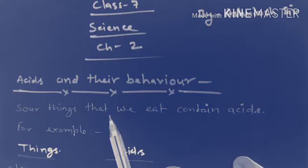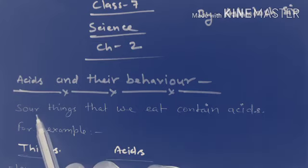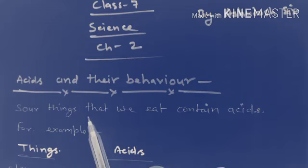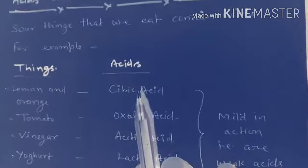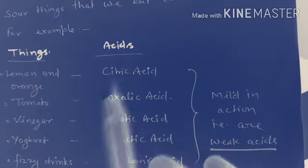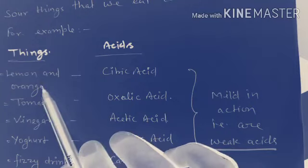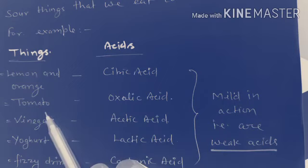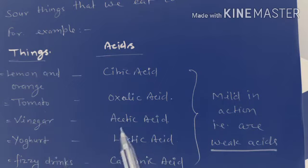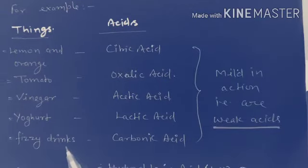All the things that we eat that are sour contain some kind of acid. For example, let's see some things that we use: lemon and orange contain citric acid, tomato contains oxalic acid, vinegar contains acetic acid, yogurt or curd contains lactic acid.